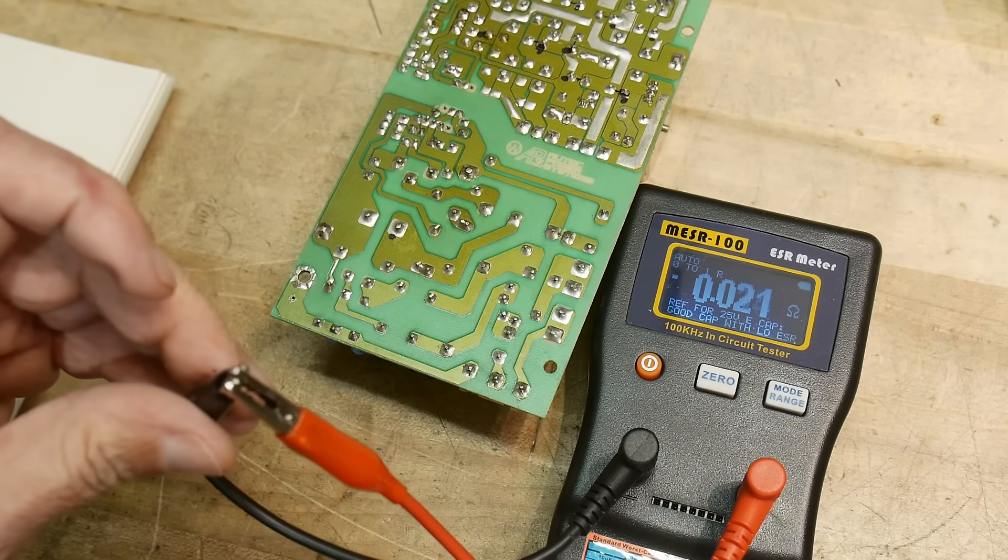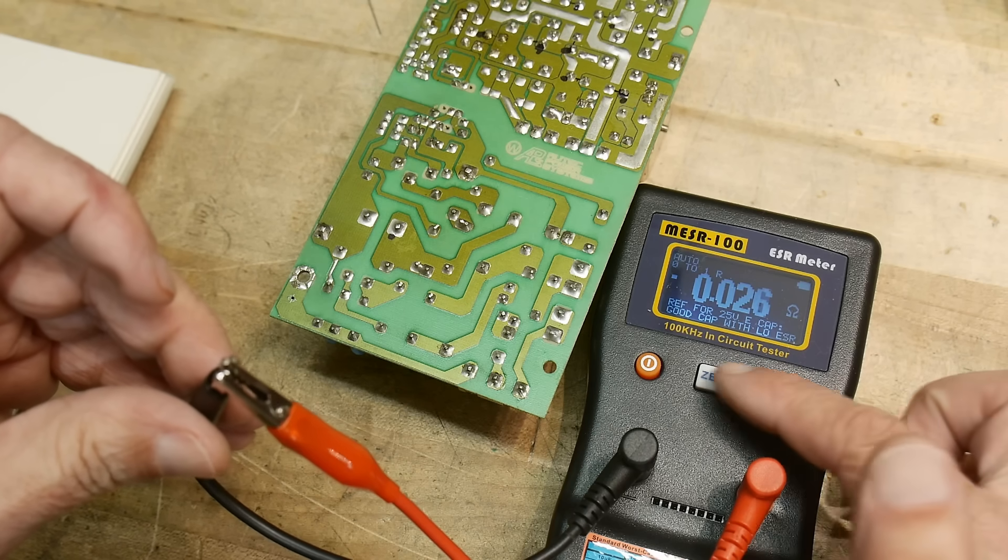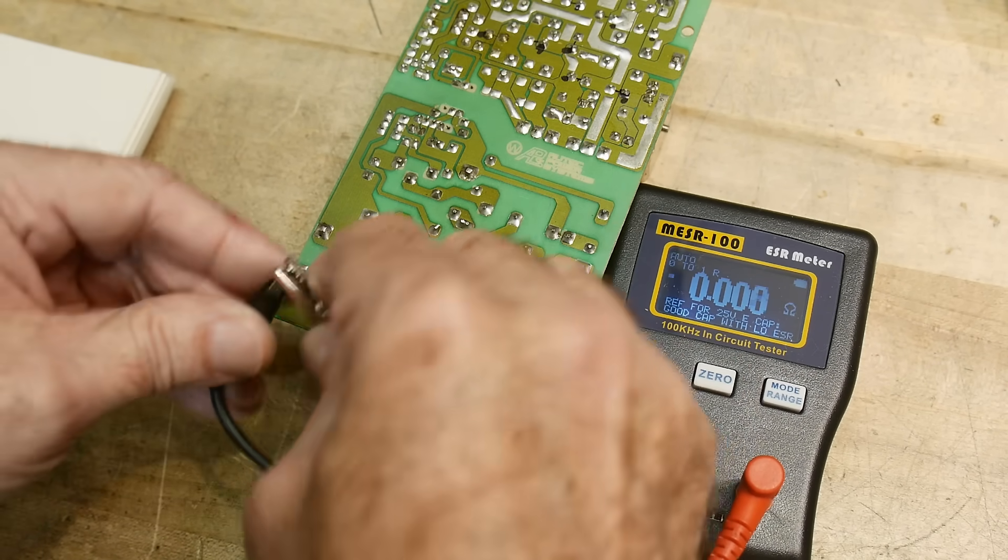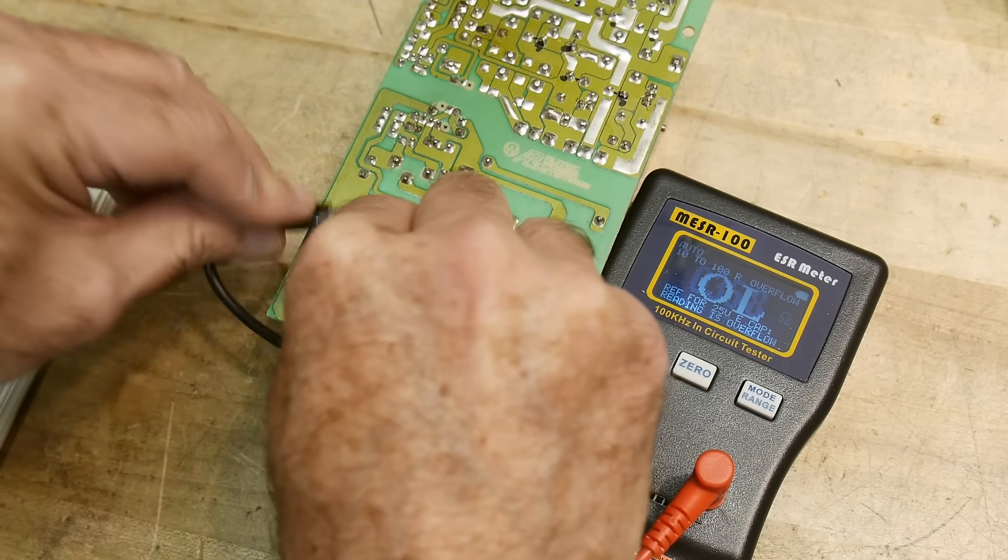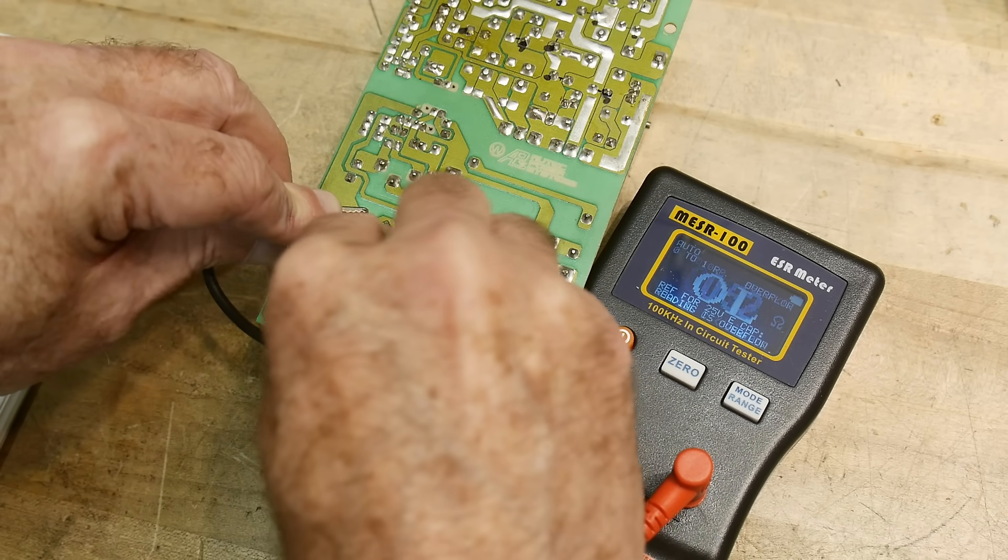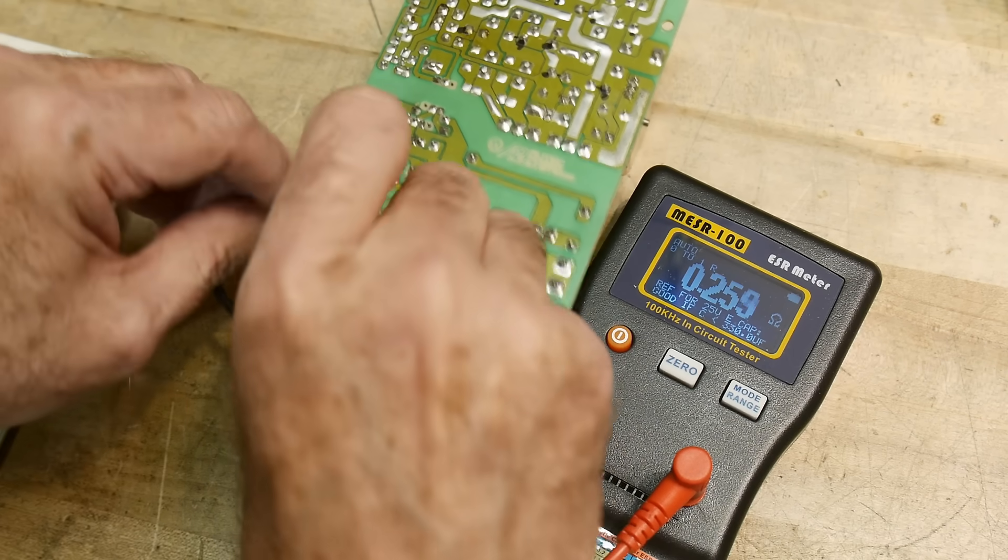0.23, 0.24. Let's see, are we still zeroed here? Let me make sure we're still zeroed. Yeah, that's a pretty good zero, but I'll do another zero. Okay, we'll come back to here.